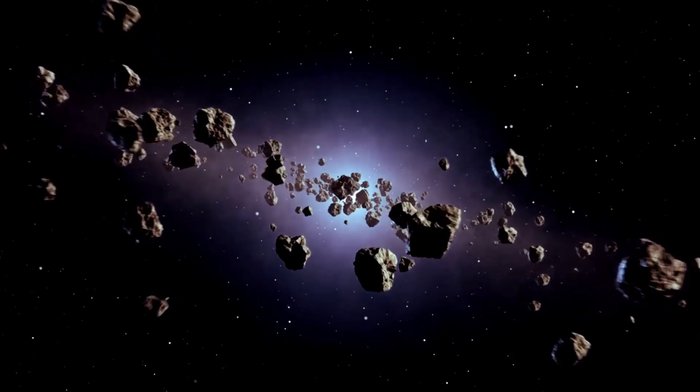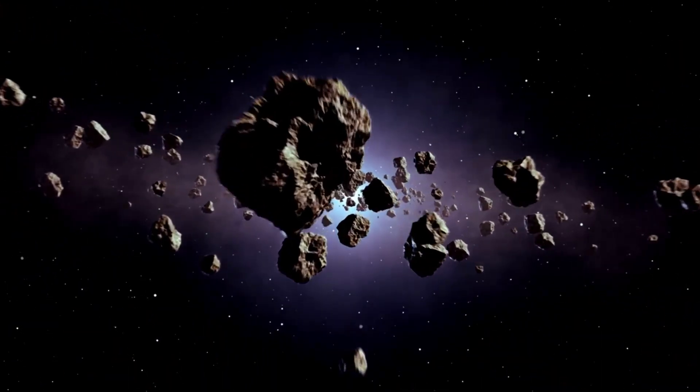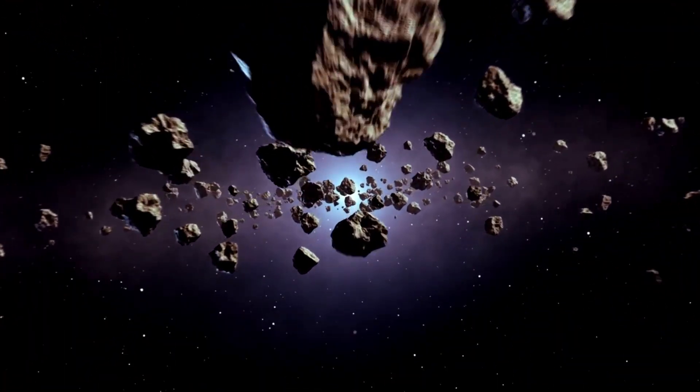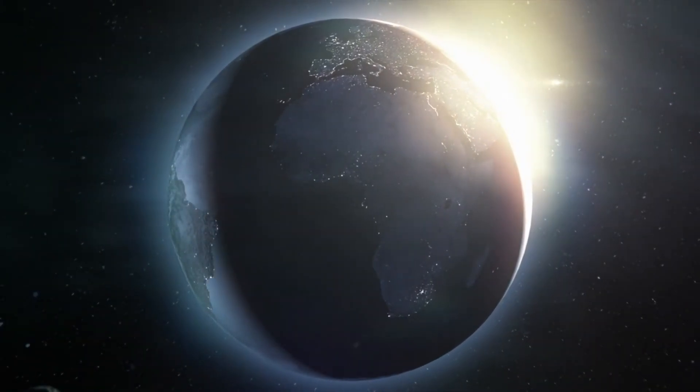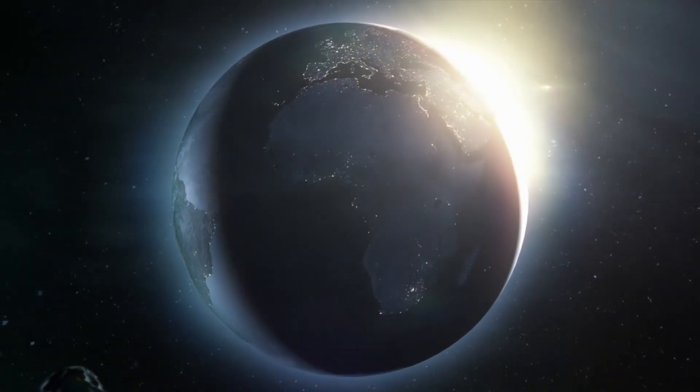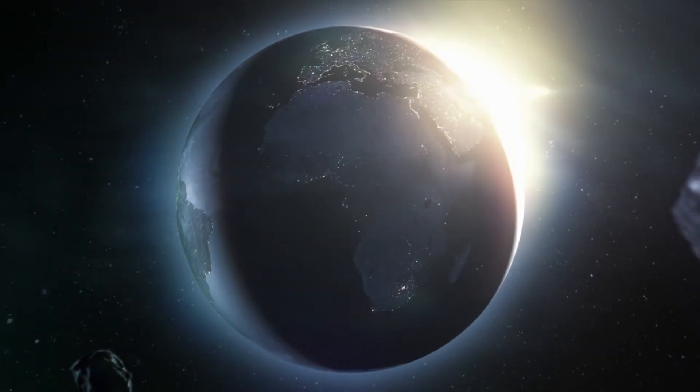It made history in 1986 by becoming the first spacecraft to fly by Uranus. Just three years later, it achieved another remarkable feat with a flyby of Neptune. To this day, it remains the only spacecraft to have traveled such a path.